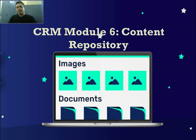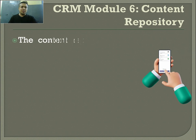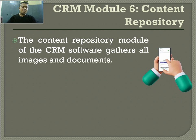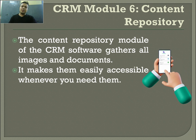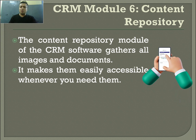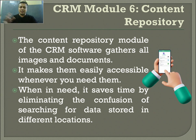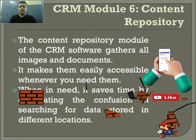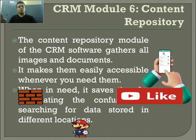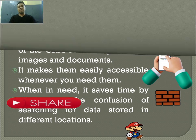The last one is Content Repository — CRM Module 6. In the Content Repository, all your images and documents are gathered together and are easily accessible whenever managers need them. You don't need to search around — all documents are found in one single module. There is often a lot of confusion about how to find data, but with Content Repository, all documents and images can be found in one single click, no matter where they are originally stored.